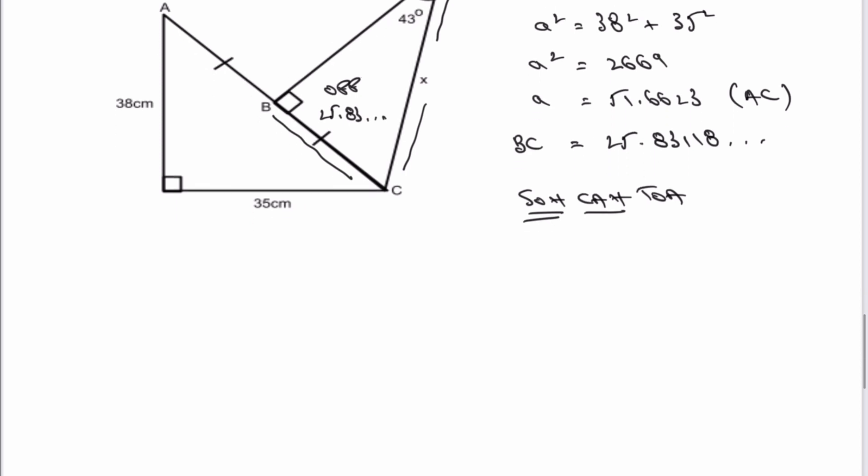The way I would write that is sine of 43° equals the opposite, which is 25.83118 dot dot dot, divided by the hypotenuse, which is actually X, which is what I'm looking for.